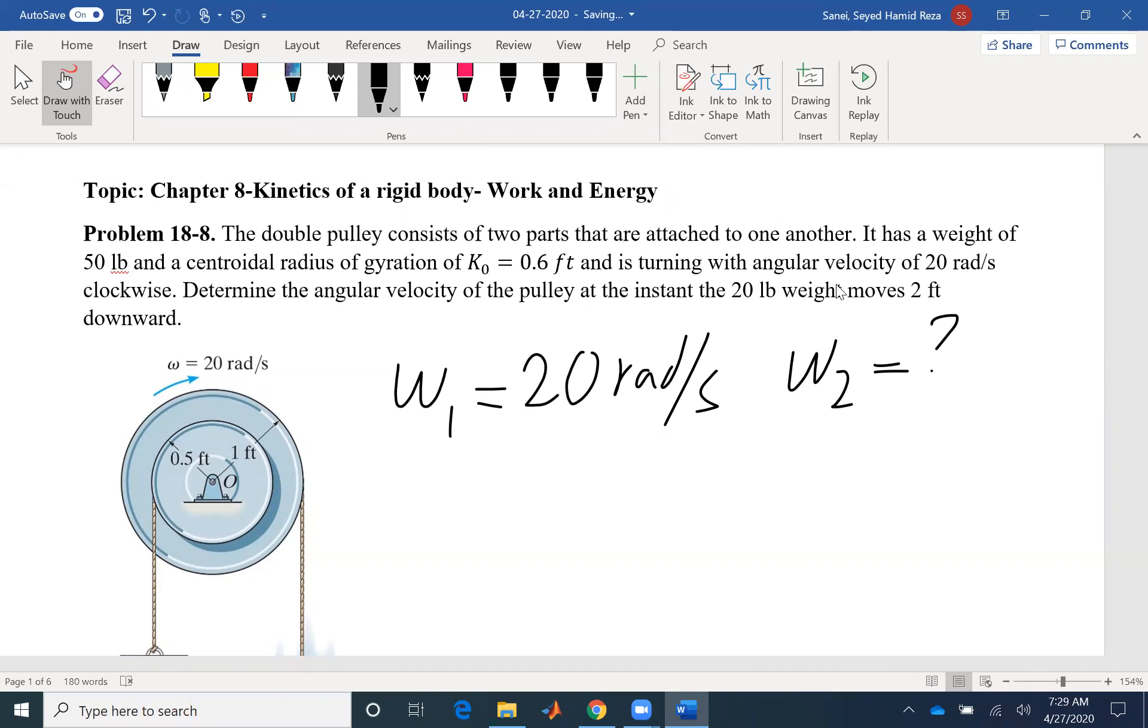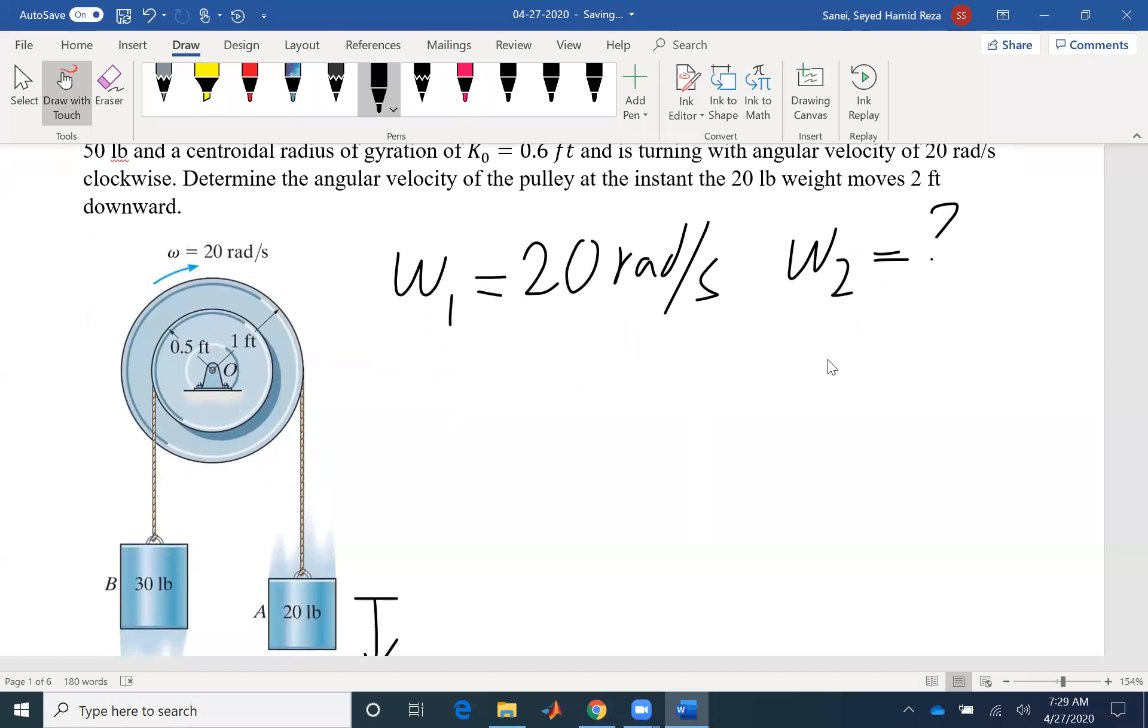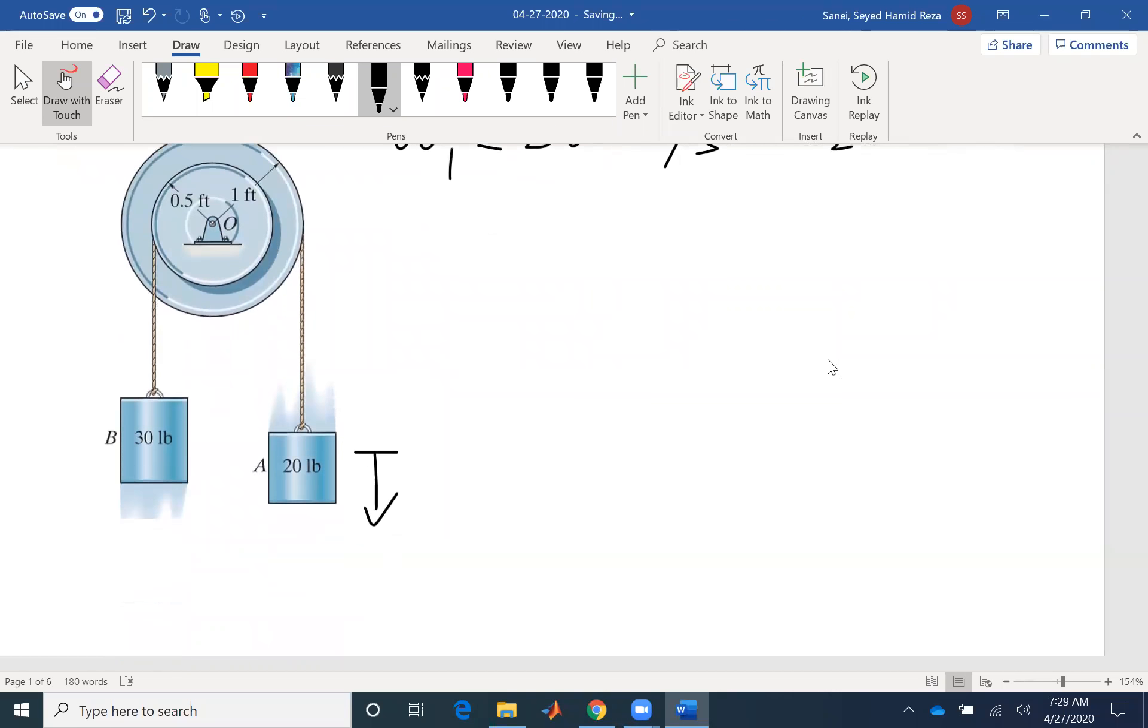We don't have any component of time. So work and energy would be a great method to solve the problem. If there was a component of time, if the angular velocity after a certain time was needed, we could use impulse momentum equations. But here is the classical problem of work and energy.